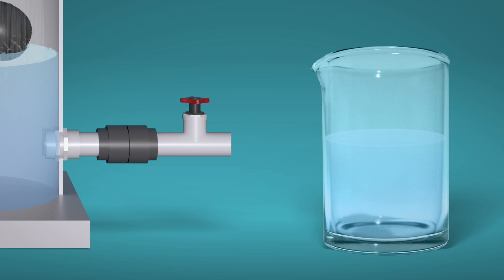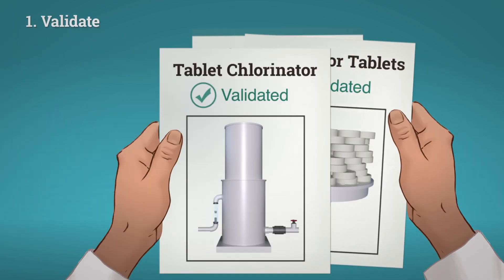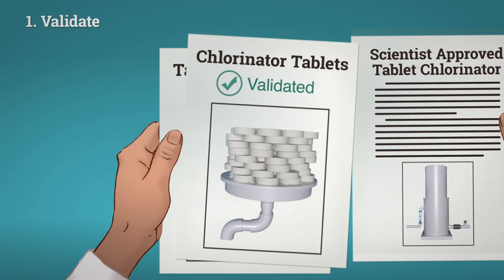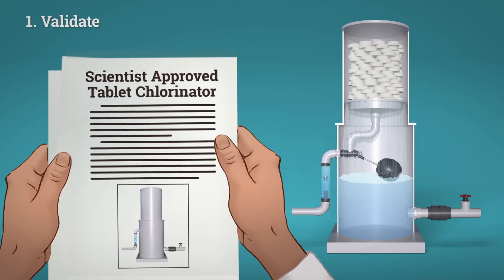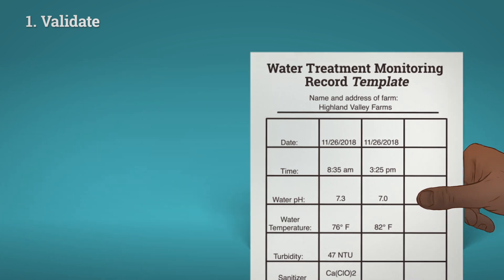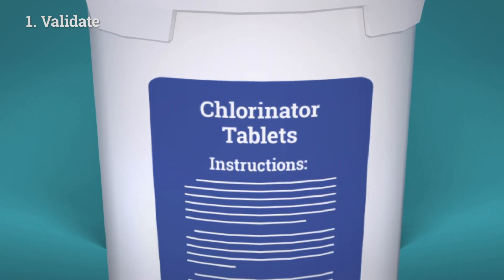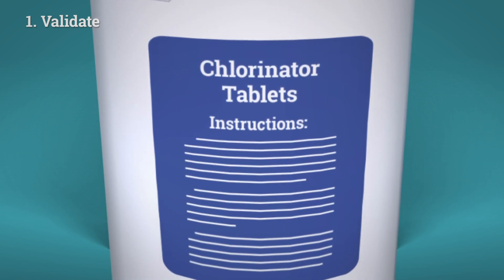To treat the water in production, you have to validate, monitor, and verify. You validate the system when it is initially installed, or when big alterations are made, to make sure it is working similarly to what has been shown to be effective by scientists. The manufacturer of the system will be able to provide you with criteria which must be met to consistently treat water. You will also want to check the label for your product to make sure it is used as directed.